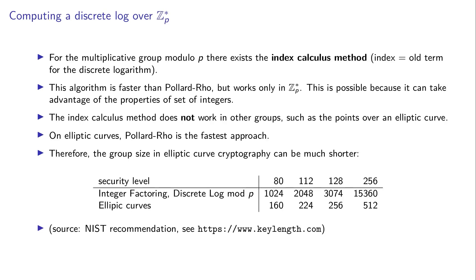One additional algorithm is the index calculus method, where 'index' is an old term for discrete logarithm. This algorithm works over the multiplicative group modulo a prime and is faster than Pollard-rho, but only works modulo a prime. It takes advantage of properties of integers, like factoring. The index calculus method does not work in other groups, such as points on an elliptic curve.